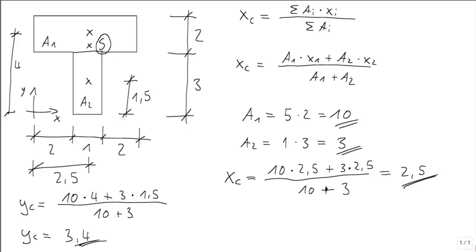To make clear where those numbers come from, I want to mark them. That's 10. 10 is always the area 1. Area 2 is 3 in our case.